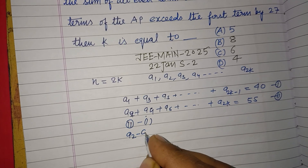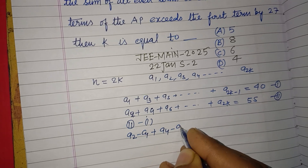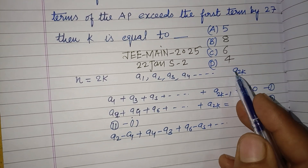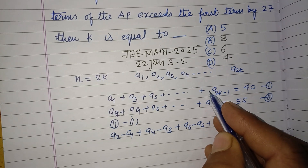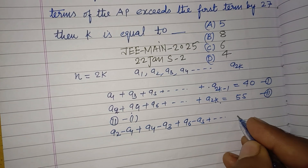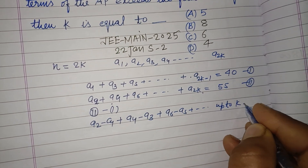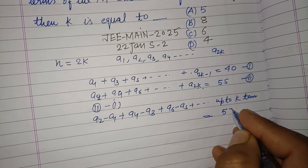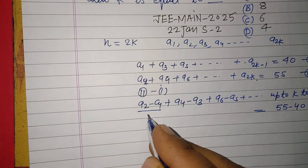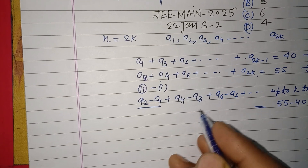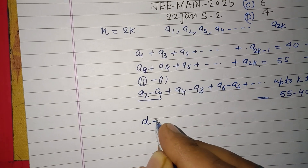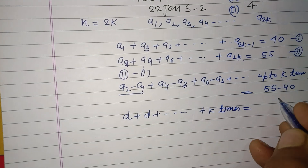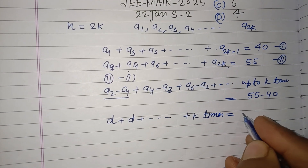Now subtracting equation one from equation two: a2 - a1, a4 - a3, a6 - a5, and so on. Since there are 2k total terms, k terms are odd and k terms are even. Subtracting gives 55 - 40 = 15. Each difference equals the common difference d, so d + d + d... k times gives kd = 15. This is equation three.